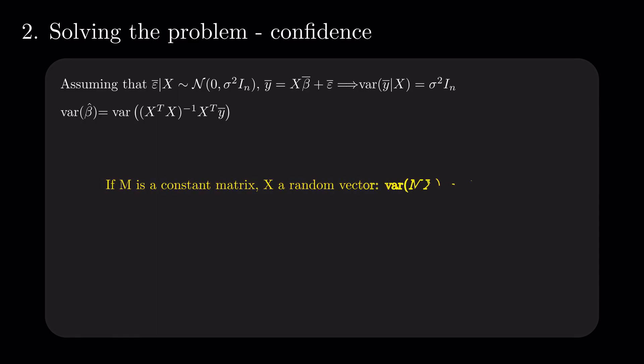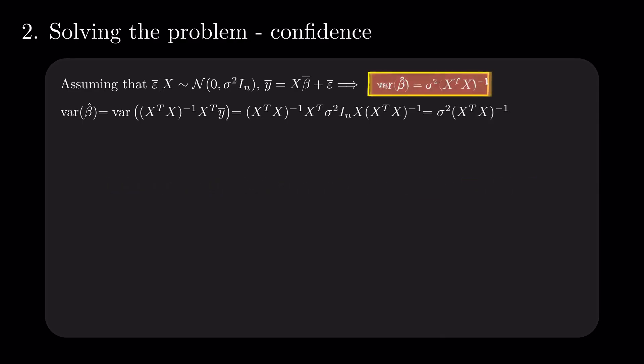We are fortunate enough we have a closed-form solution for the estimates of beta that we plug into the variance. Using the formula for computing the variance of constant matrix multiplication, we get the result for betas. They depend only on the matrix x and the variance of the errors given x.